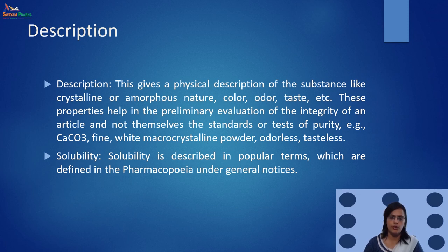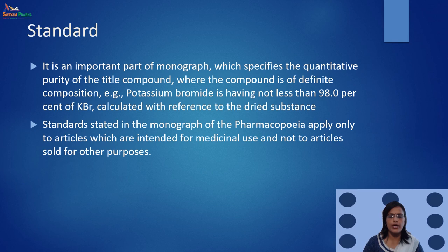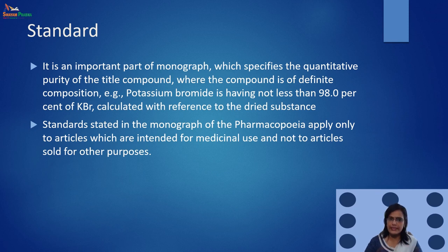After the drug substance description in the monograph, the next important part is the standard, which specifies the quantitative purity of the compound — for example, percent calculated with reference to dried substance. Standards stated in the monograph of the pharmacopoeia apply only to articles intended for medical use.